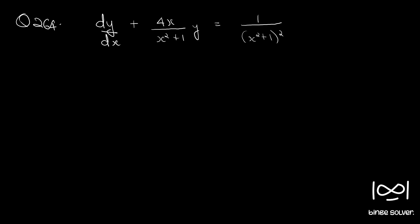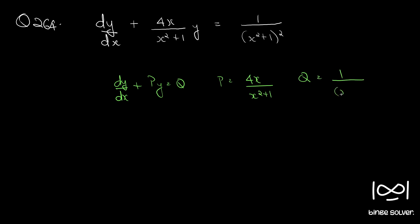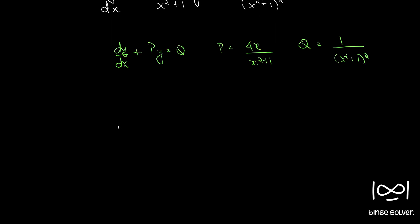Question number 264: dy/dx plus 4x/(x²+1) times y equals 1/(x²+1)². This is in the standard form of a linear differential equation, dy/dx + Py = Q, where P and Q are constants or functions of x alone. Here, P is 4x/(x²+1) and Q is 1/(x²+1)², and both are functions of x alone, so this is a linear differential equation.